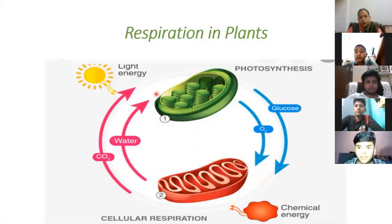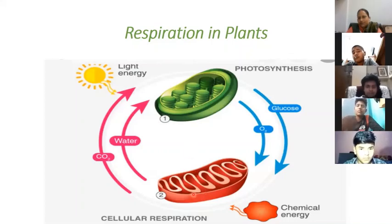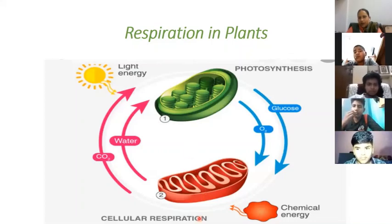You can see two structures here — one green and one red. These represent organelles: the green one is for photosynthesis and the red one is for respiration.